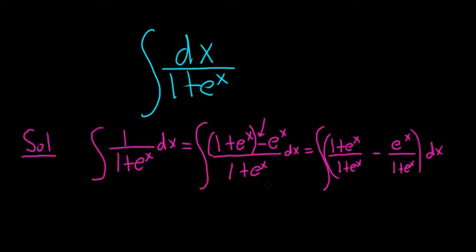This idea that's used in this problem is used in multiple problems. These cancel. So you get 1 minus e to the x over 1 plus e to the x parentheses dx.